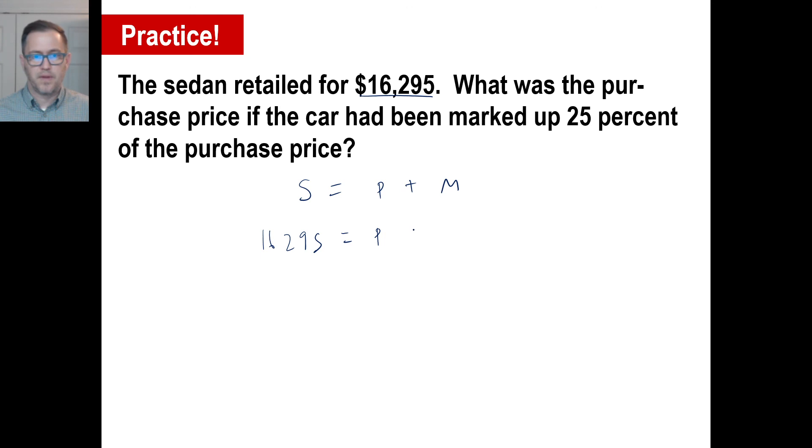What was the purchase price? We don't know. If the car had been marked up 25%, instead of putting an M there, you put 0.25 of the purchase price. We have 16,295 equals 1.25P. What is 16,295 divided by 1.25? That would be $13,036. That's what the car dealer bought it for. He sold it for $16,000 and some change. See you guys next week. Have a good day.